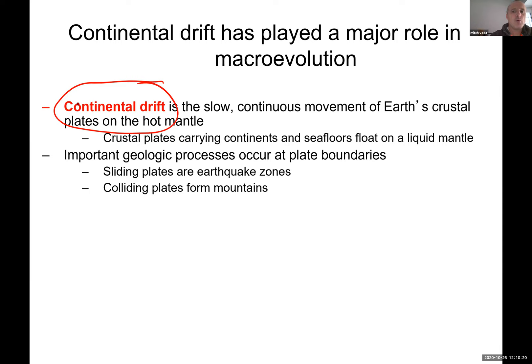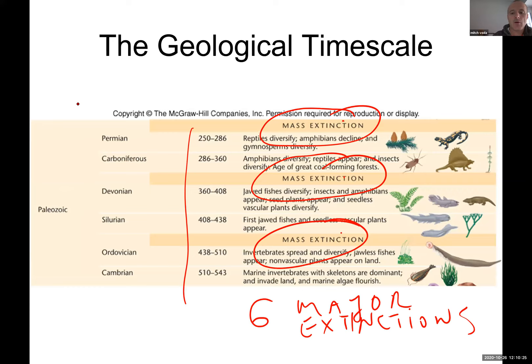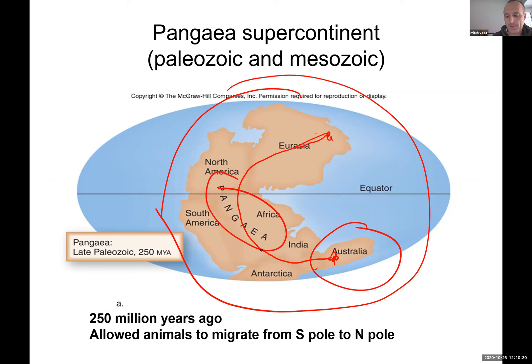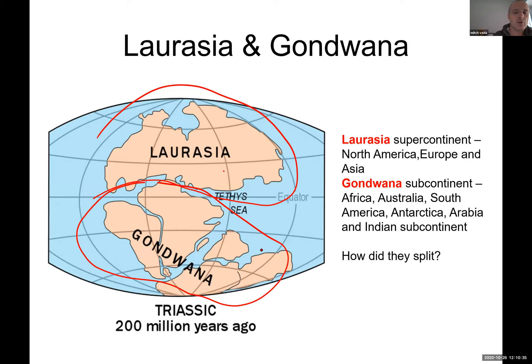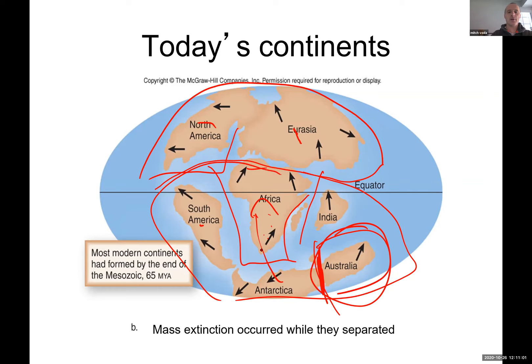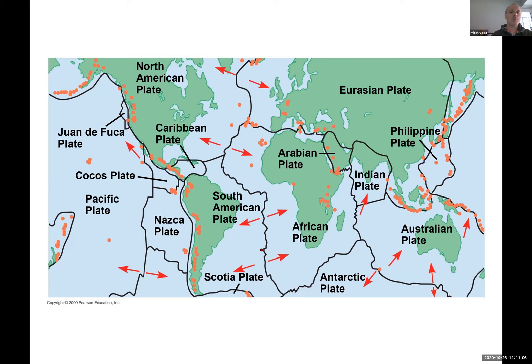Continental drift played a major role in speciation — all these pieces getting trapped and actually evolving. As the continents separated, animals couldn't interact with each other, so they started evolving differently. If you have a predator around you versus no predator, you're going to evolve completely differently and much faster, because you have to adapt to certain conditions and somebody is constantly chasing you. Only the most fit will survive. Here you can see how the earth looks today, with tectonic plates shown by lines — that's where we have major earthquakes.